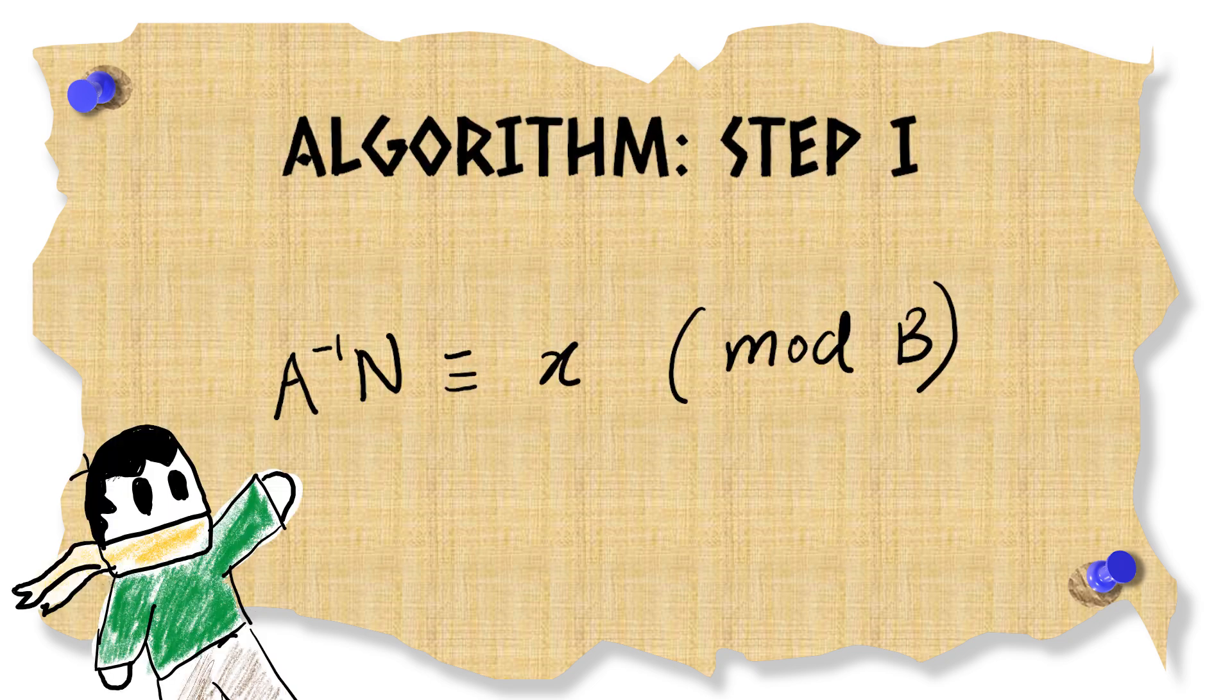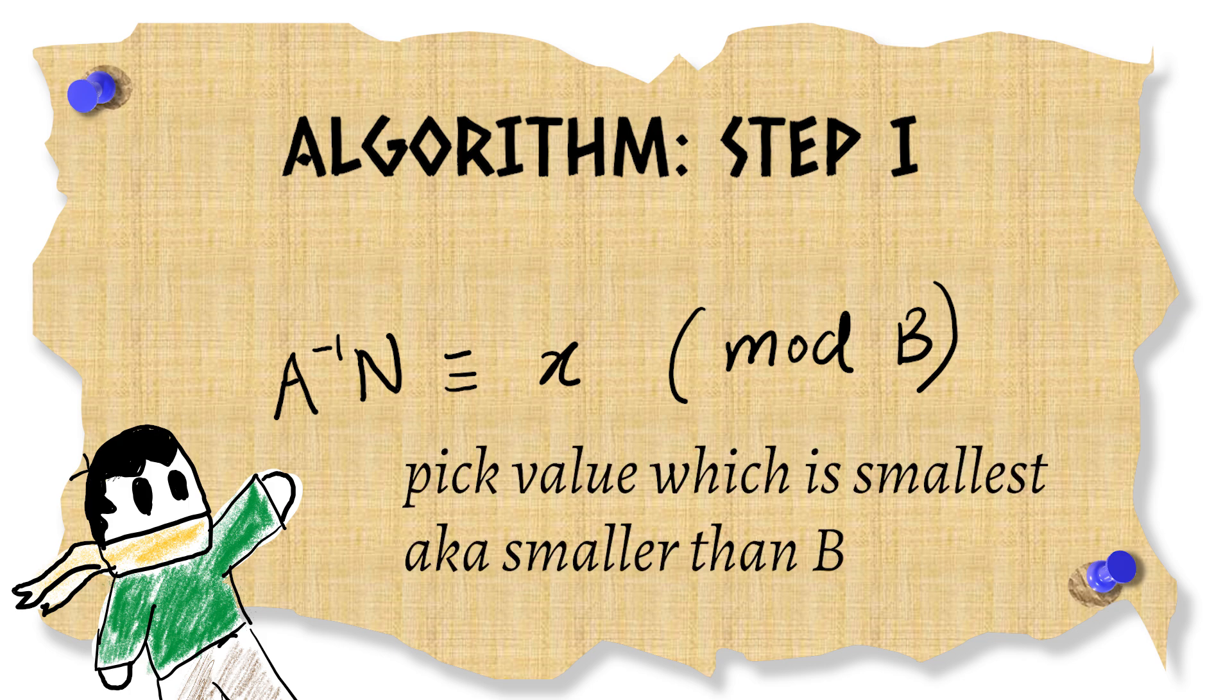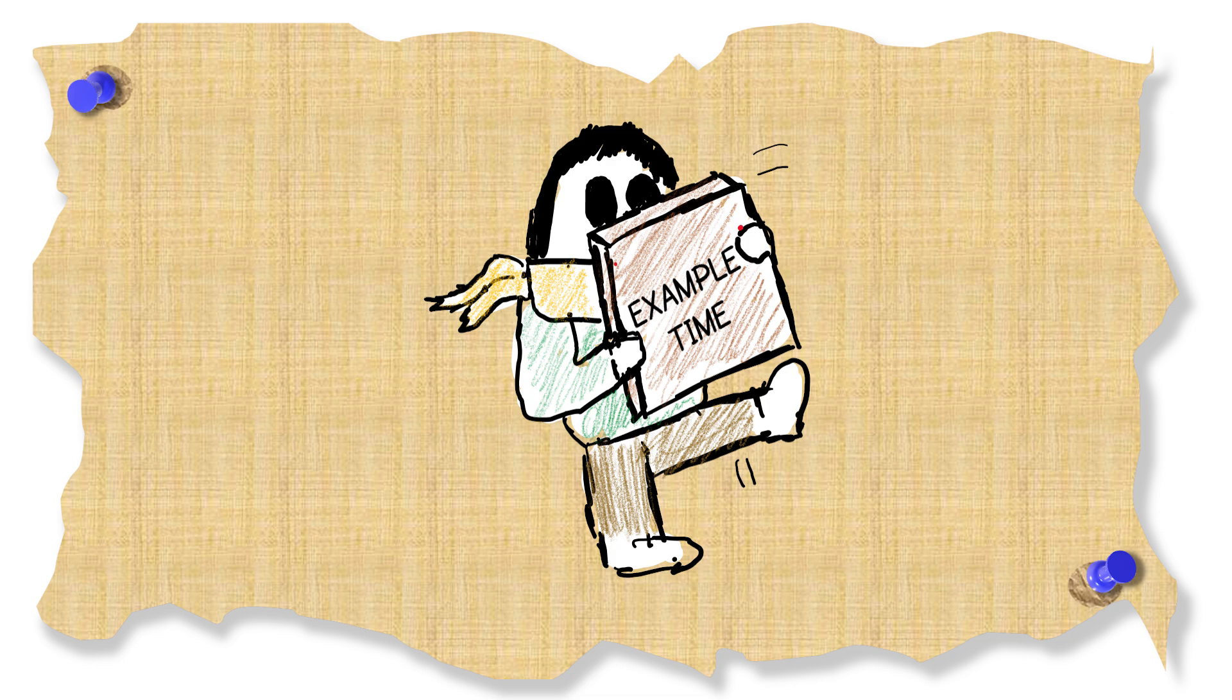The first step of the algorithm basically makes its congruence and equals by asking us to pick the smallest number which is congruent to A inverse N modulo B. Life is incomplete without our examples so here's one.